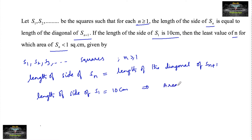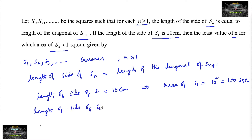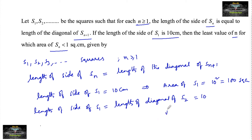This implies that the area of square s1 is equal to 10 squared, which is 100 square cm. Now, the length of the side of s1 is equal to the length of the diagonal of s2, which equals 10. Since the diagonal equals root 2 times the side, we have root 2 times the side of s2 equal to 10 cm.